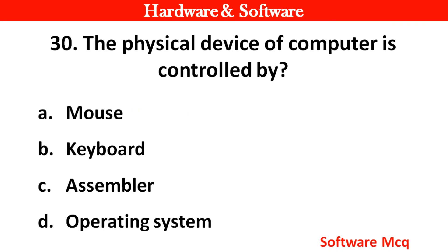Question 28: The physical devices of a computer are controlled by? Options: A. Mouse, B. Keyboard, C. Assembler, D. Operating system. Right answer is option D — Operating system.